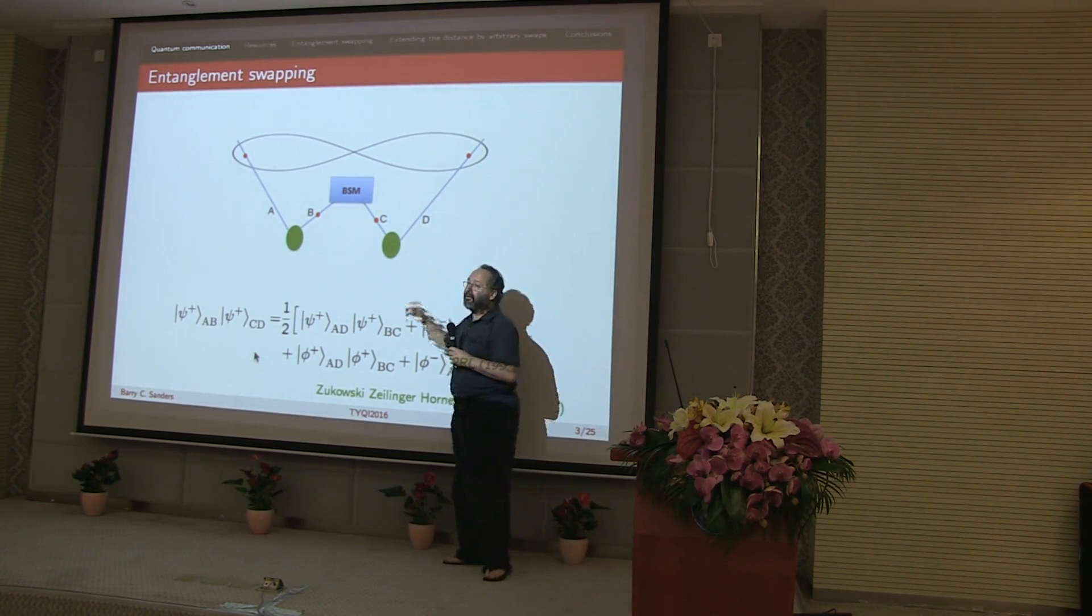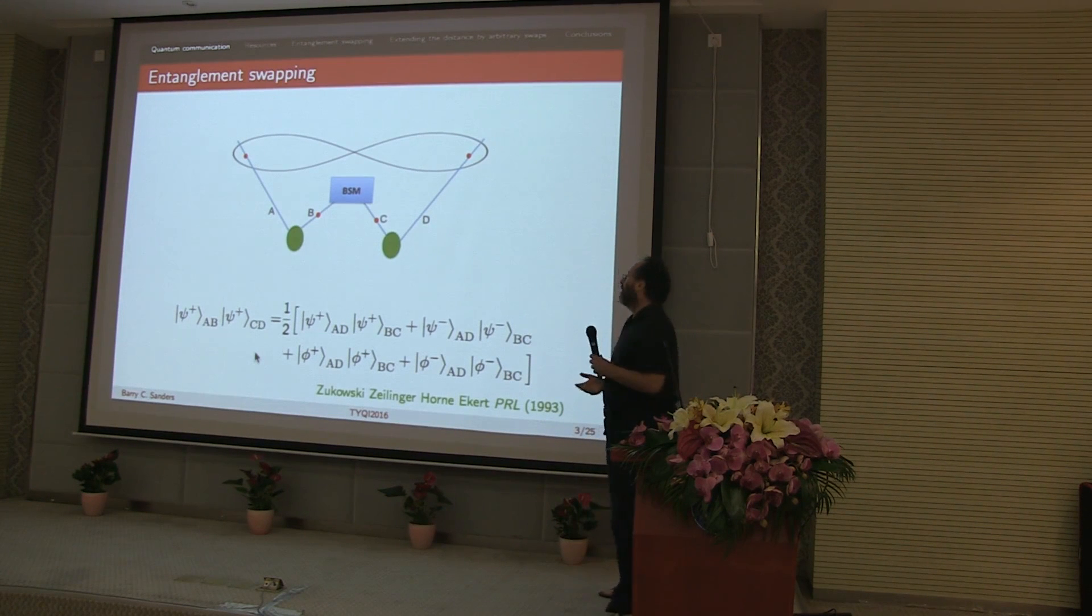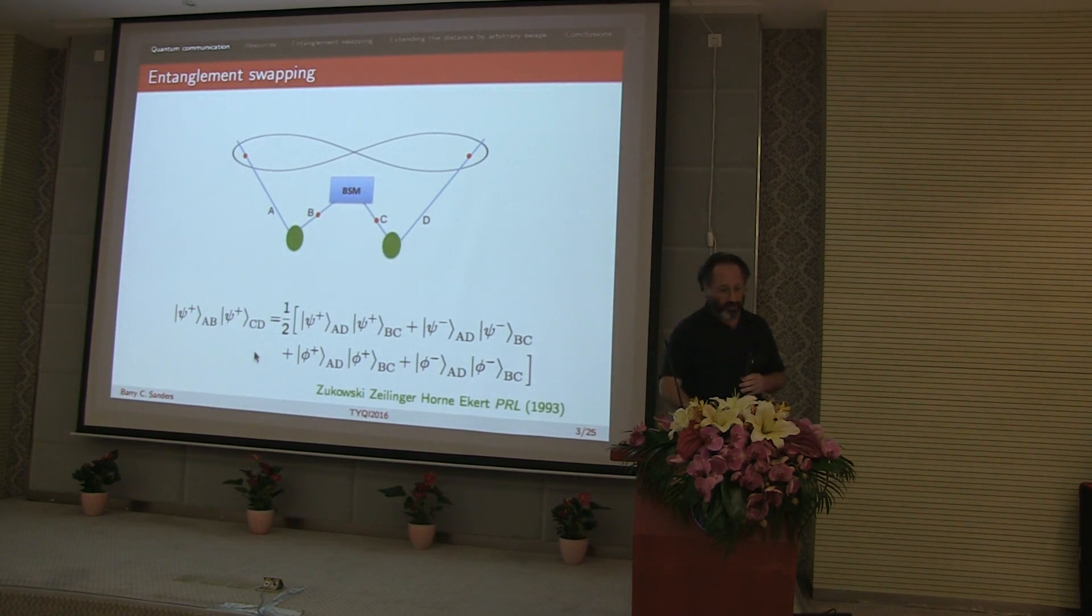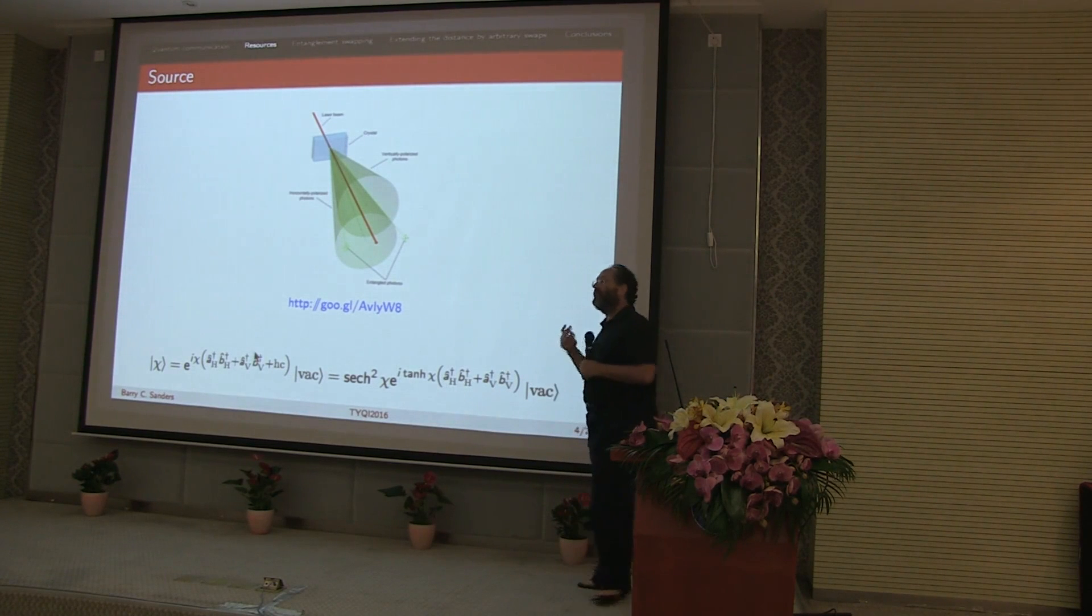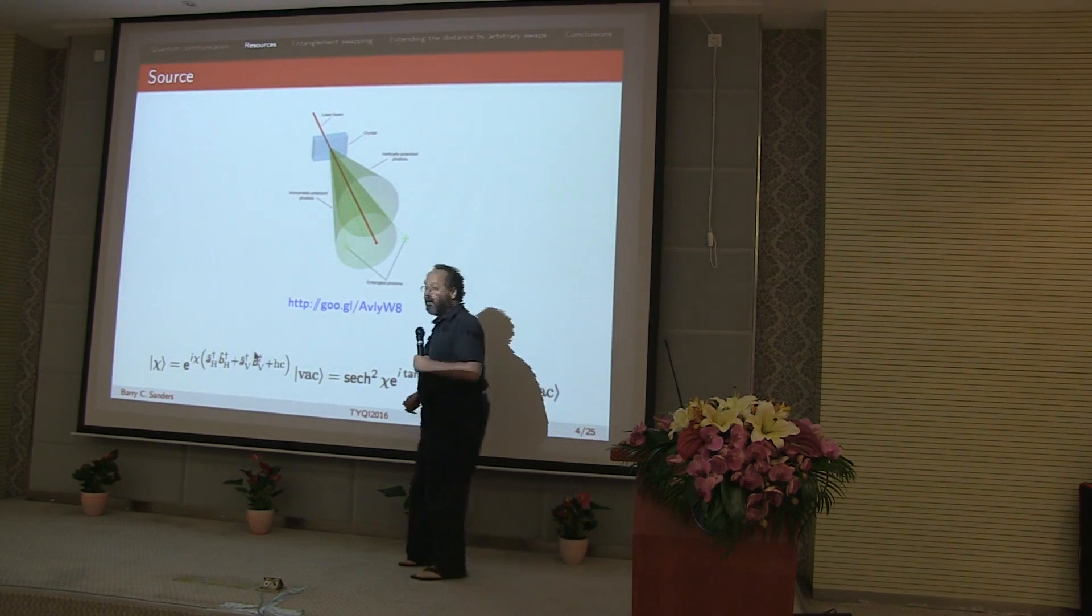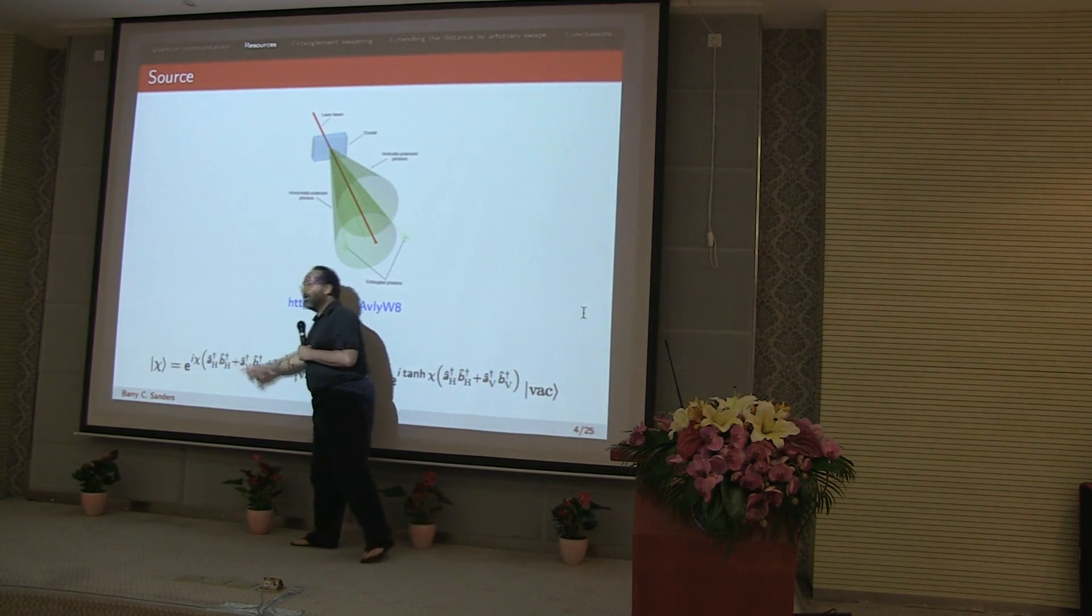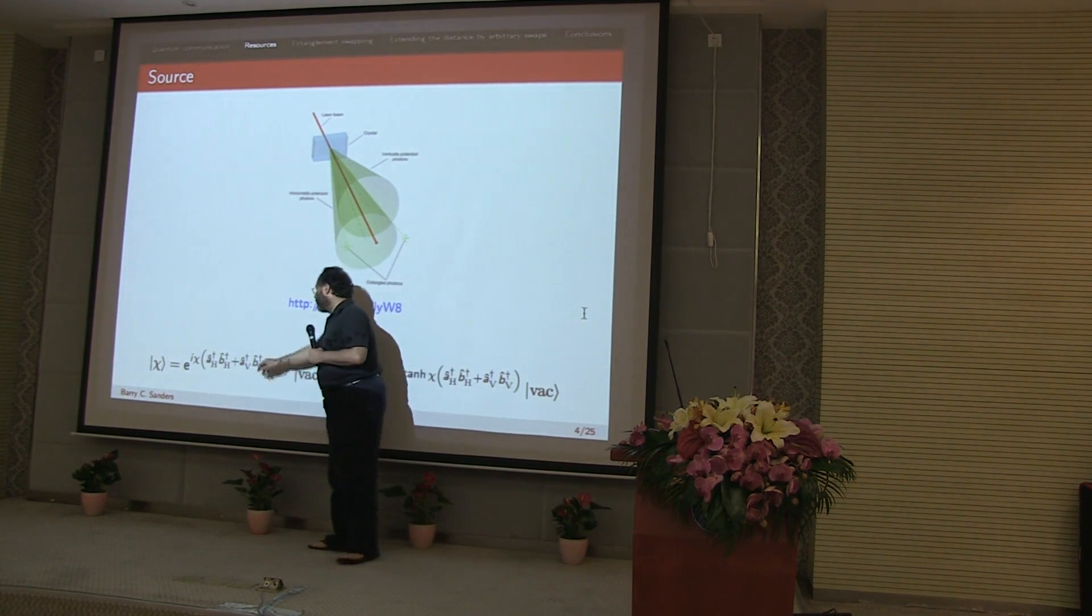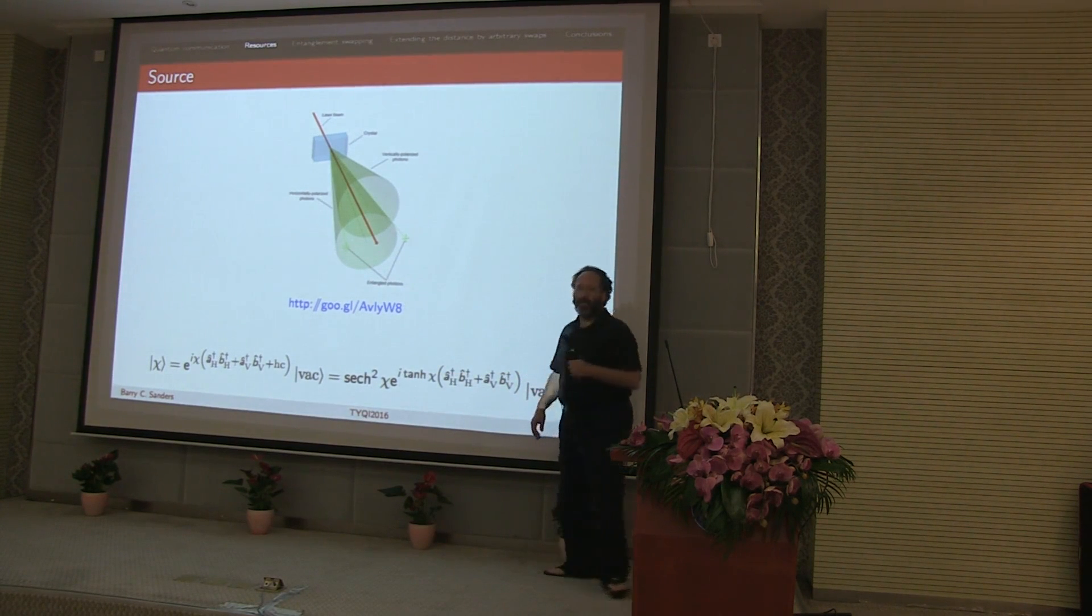The reality is that the parametric down converter has, it has a probability of having nothing in the output. A probability of a pair. A probability of two pairs. And so on. The detectors have dark counts, inefficiency, etc. So that's, that reality is what we're, one of the things that we're including. So if we take into account that the pair is not really producing, the PDC is not producing single photon pairs right away, but rather can have vacuum in two pairs and so on. We can write the, we can just describe it by a pure state where we exponentiate creation operators. So that would create horizontally polarized photons in the A and B mode. Act on the vacuum. And then we can just write this exponential acting on the vacuum.